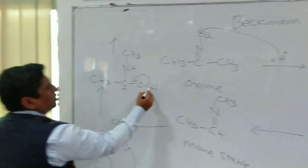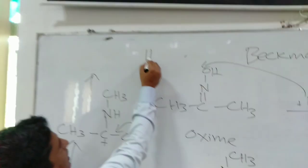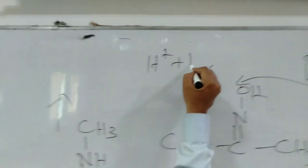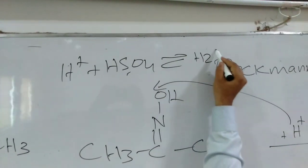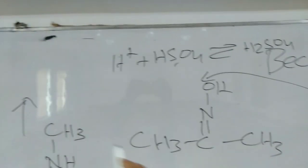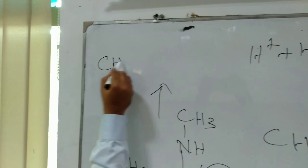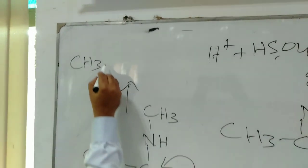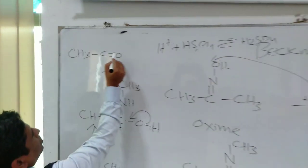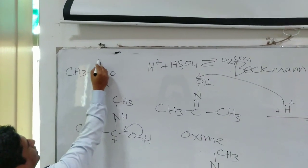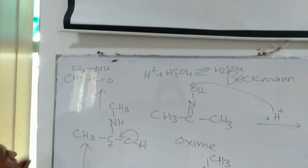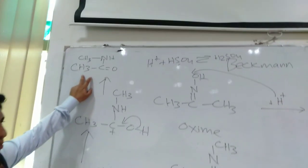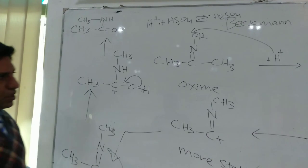And the product which is formed is CH3-C=O-NH-CH3. That is a substituted amide is formed.